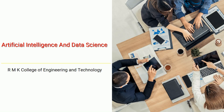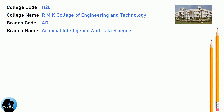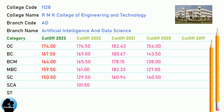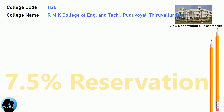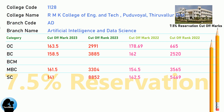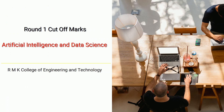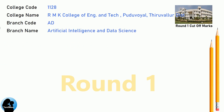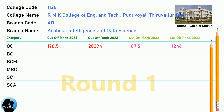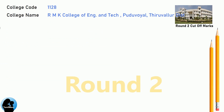DNA cutoff for MK College of Engineering and Technology in Artificial Intelligence and Data Science. DNA 7.5 reservation cutoff for MK College of Engineering and Technology in Artificial Intelligence and Data Science. DNA Round One cutoff for MK College of Engineering and Technology in Artificial Intelligence and Data Science. DNA Round Two cutoff for MK College of Engineering and Technology.